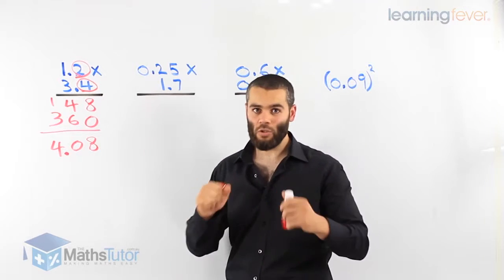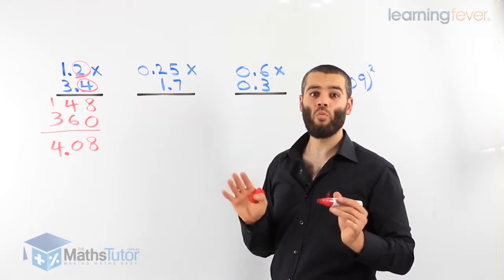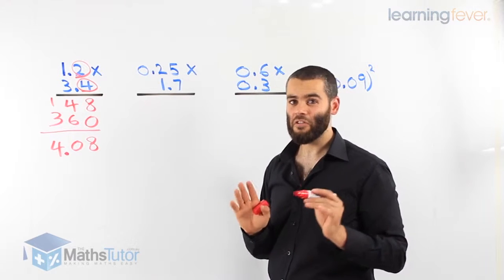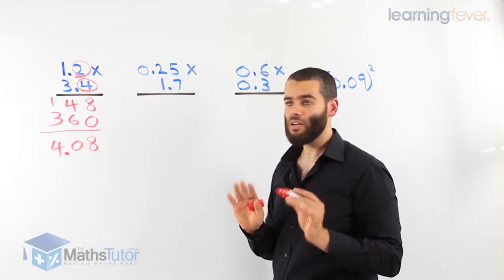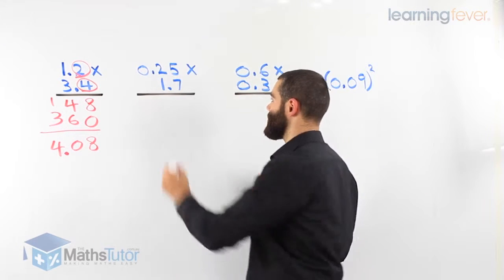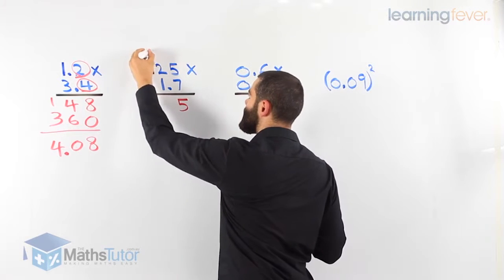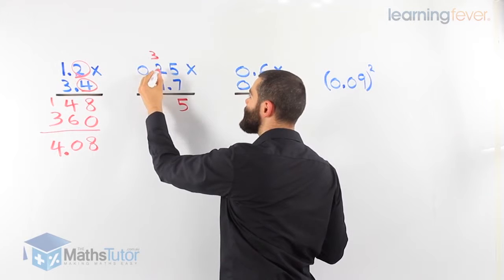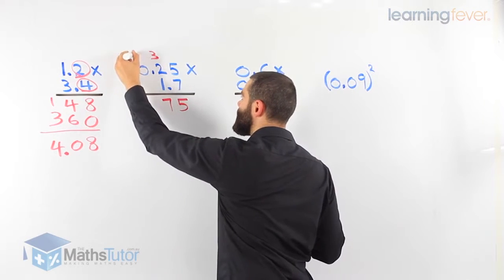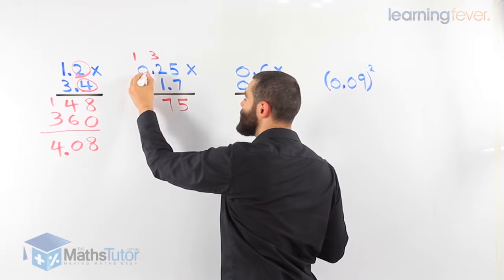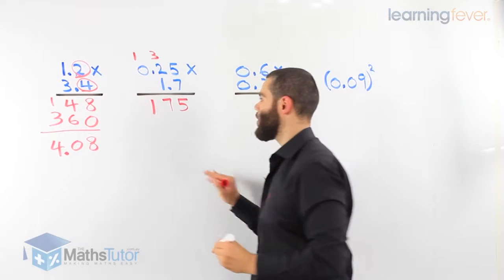Let's do another one and you'll get the hang of it. We have 0.25 times 1.7. We disregard the points for now. Let's do it as a normal multiplication. 7 times 5 is 35. 7 times 2 is 14, plus 3 is 17, carry the 1. 7 times 0 is 0, plus 1, we put our 1.